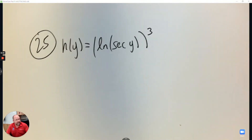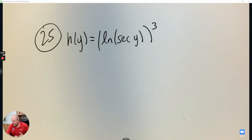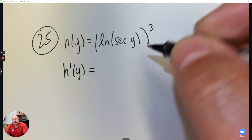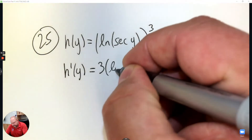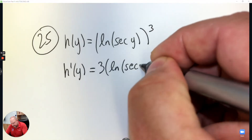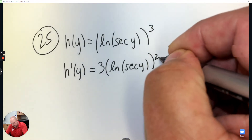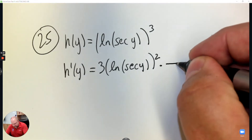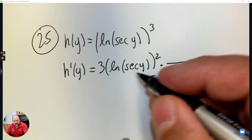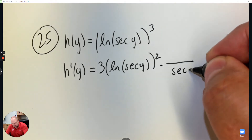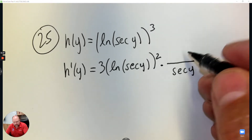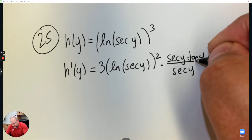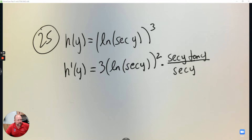Question 25. We're taking derivatives here, so we're going to start with the power rule, then inside out. The power rule for ln — that's a fraction. What I see goes in the denominator, and then the derivative of that goes in the numerator. The derivative of secant is secant tangent. Obviously no plus C because we're taking derivatives.